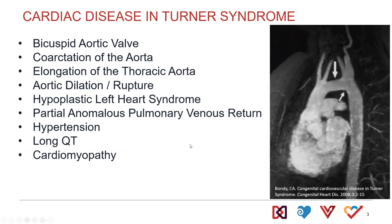There's a wide range of what we see from a cardiac standpoint. Most commonly, we see a bicuspid aortic valve or coarctation of the aorta. There are certainly a whole range of findings from very mild, such as elongation of the thoracic aorta shown here, to very significant aortic and left-sided abnormalities such as hypoplastic left heart syndrome, and then a number of systemic and pulmonary venous abnormalities as well.